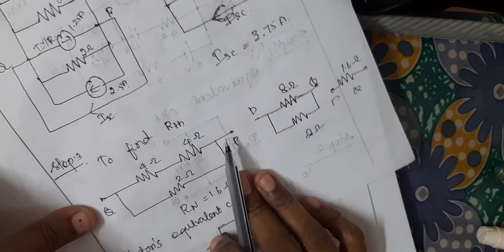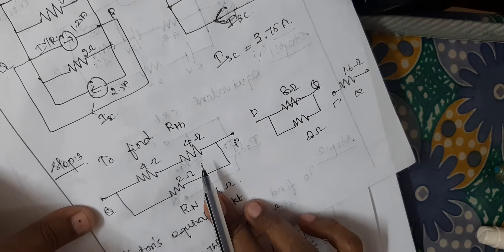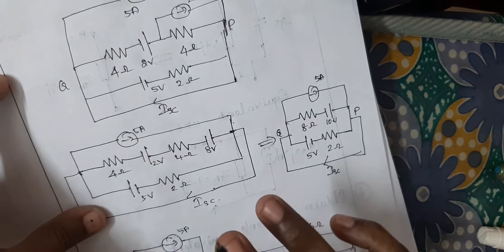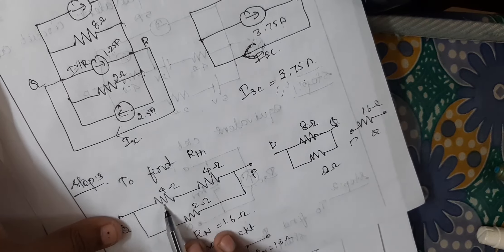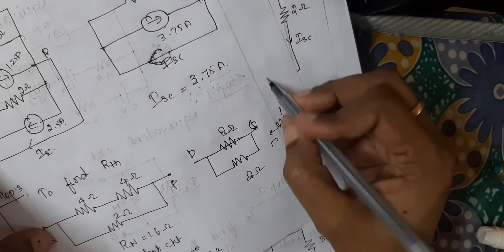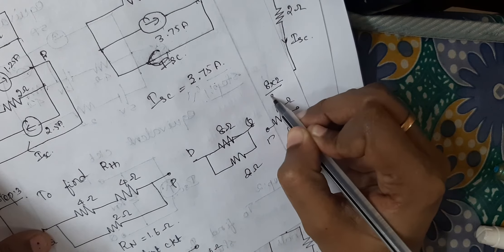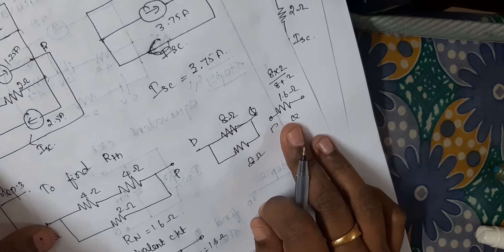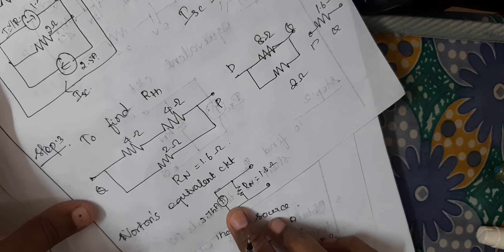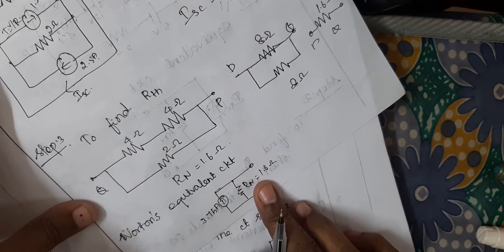Next, you want to find RN. In order to find RN, you want to open circuit the current source and short circuit the voltage source. Open circuit the current source — 4 Ohm and 4 Ohm are series, and 2 Ohm is parallel. So 8 Ohm is parallel to 2 Ohm: 8 times 2 divided by 8 plus 2 equals 1.6 Ohm. So the Norton's resistor value is 1.6 Ohm. Now you can draw the equivalent circuit — current source is 3.75A and the Norton's resistor value is 1.6 Ohm.